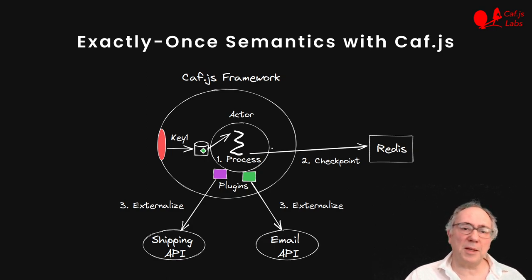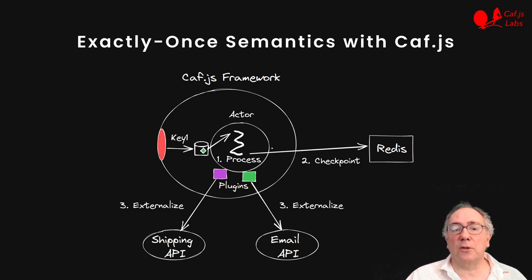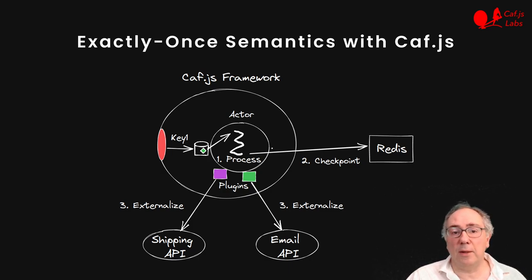This makes it very easy to build a consistent, at-least-once API gateway. For example, just keep the last processed Kafka offset in the actor state, and mediate API calls with transactional plugins that will delay, checkpoint, and retry if needed, every external interaction.